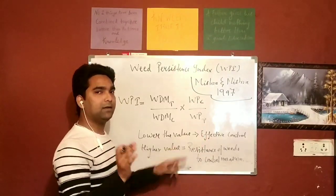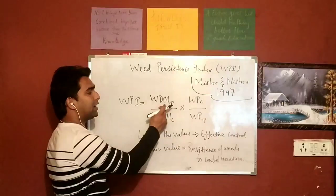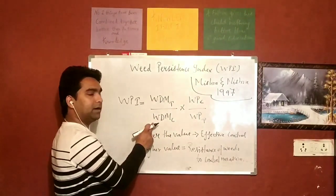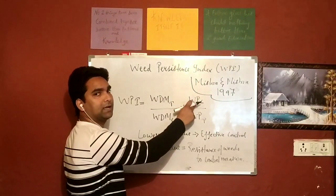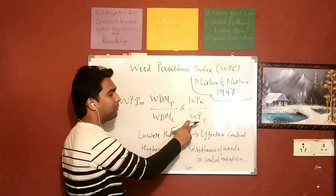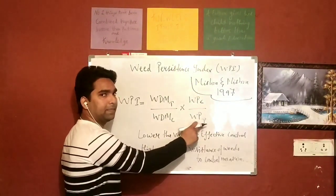So I hope it is clear. Once again let me repeat: weed dry matter in the treated plot divided by weed dry matter in the control plot, multiply by weed population in the control plot divided by weed population in the treated plot.